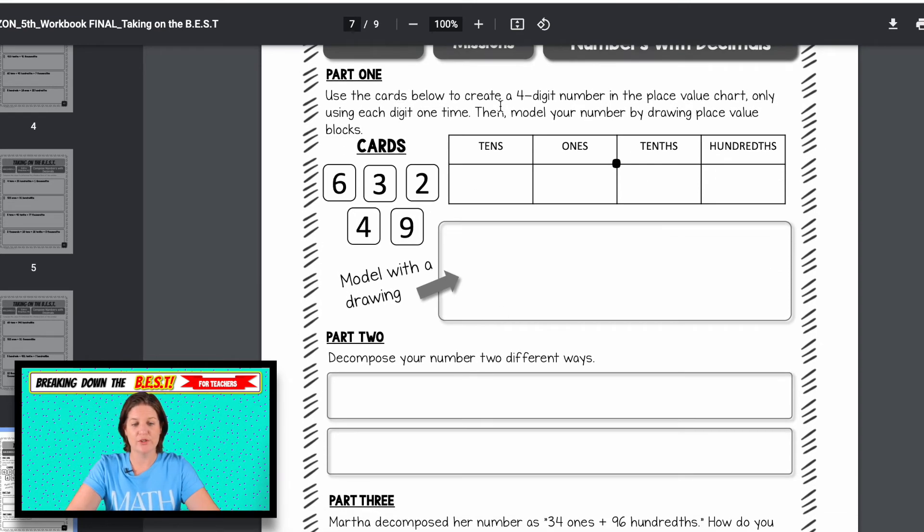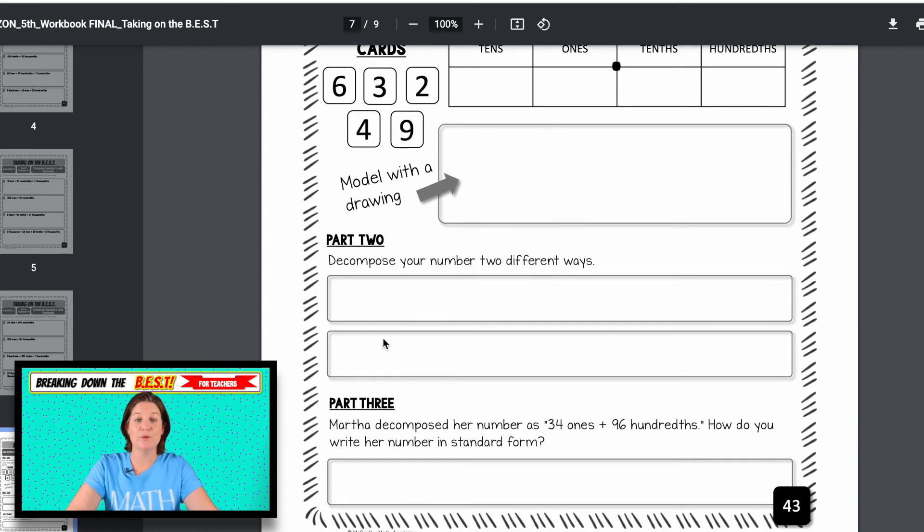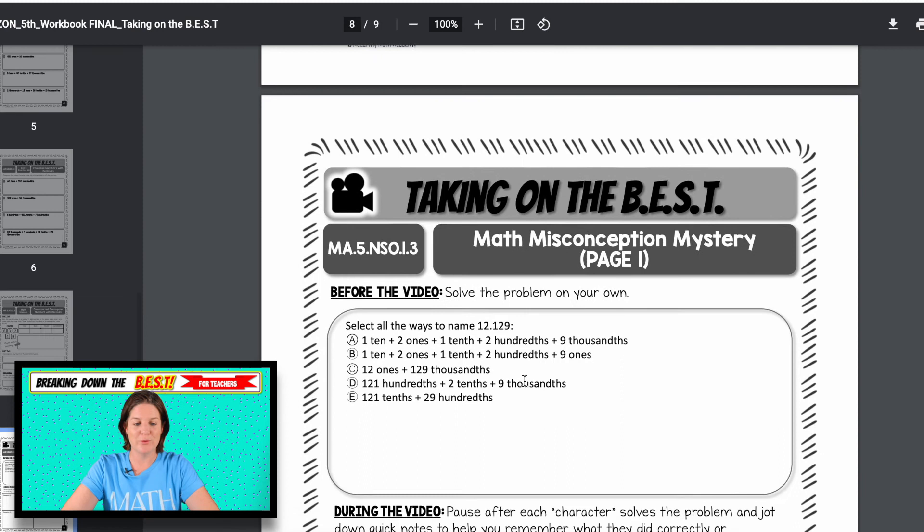So you can see here it says use the cards to create a four digit number in the place value chart. Remember that the standard kept saying use base 10 blocks, use a place value chart, only using each digit one time, then model your number by drawing place value blocks. So they can place their number in here, model with a drawing, decompose that number two different ways, and then compose it back into standard form. So Martha has decomposed a number and now she's writing it back into standard form, which really is composing those numbers back. So pretty cool there.